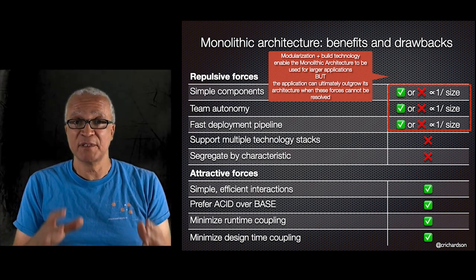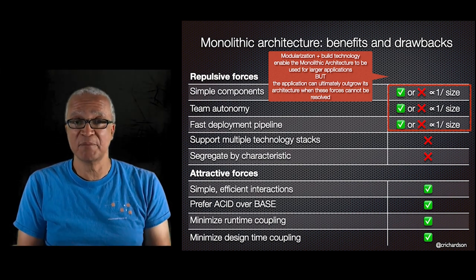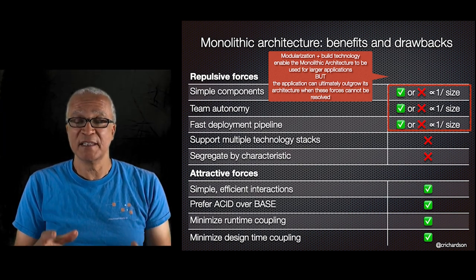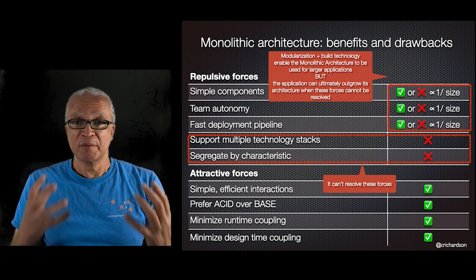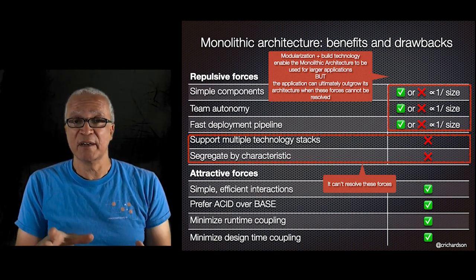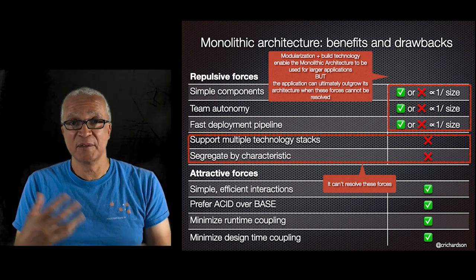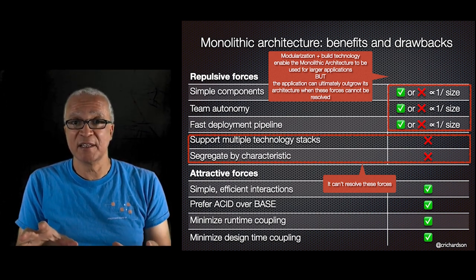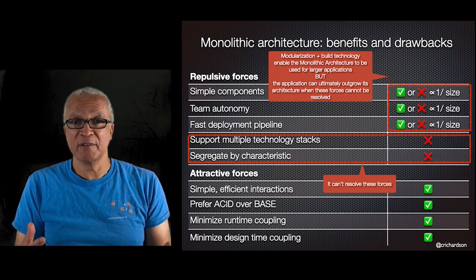Some of these issues can be mitigated through modularization and sophisticated build technologies like automated merge queues and clustered builds. But ultimately the monolithic architecture likely becomes an obstacle to rapid, frequent, and reliable deployment. Furthermore, it cannot resolve the last two dark energy forces — it can only use a single technology stack, requiring the entire codebase to be upgraded at once. And since there's only one component, there's no possibility of segregating subdomains by their characteristics — scalability, security requirements, or business criticality.